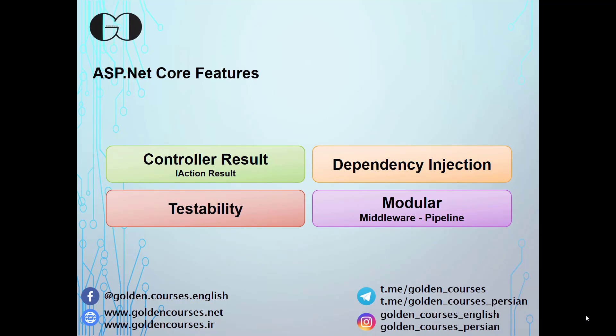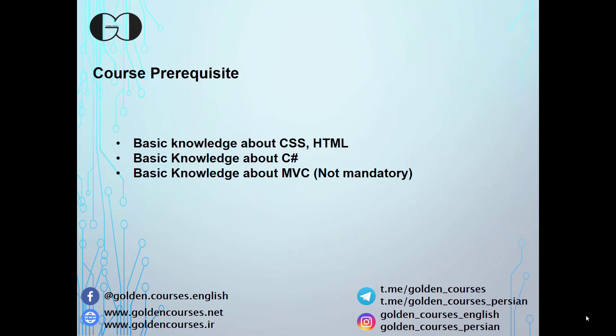ASP.NET Core has a powerful controller class which covers most result types such as view results and JSON results. This means you can use the same controller for both MVC and ASP.NET Core API applications. It also has built-in dependency injection, great testability options, and we will talk about its modular middleware and pipeline as well.